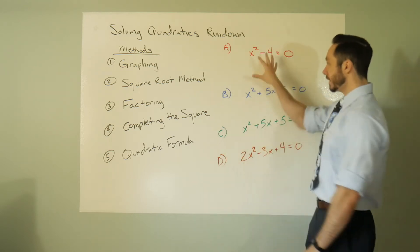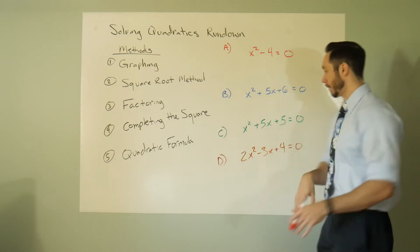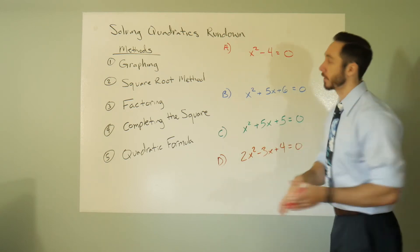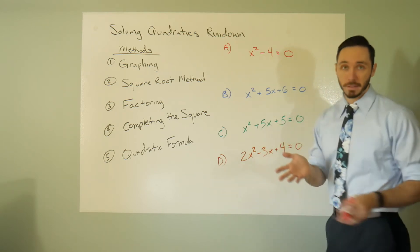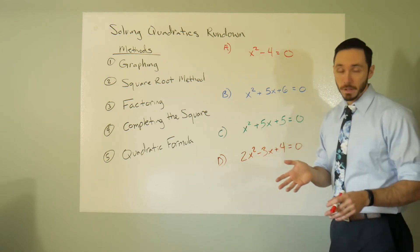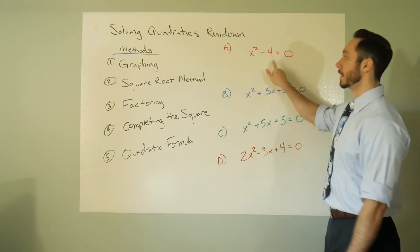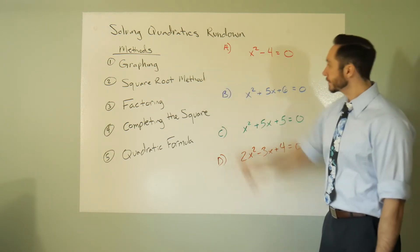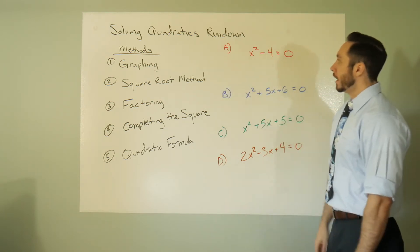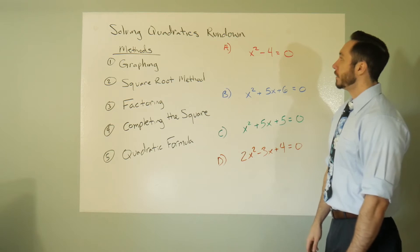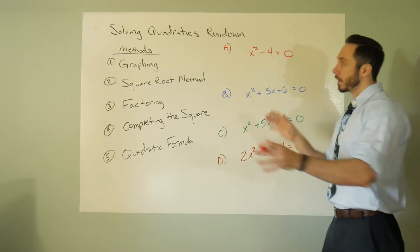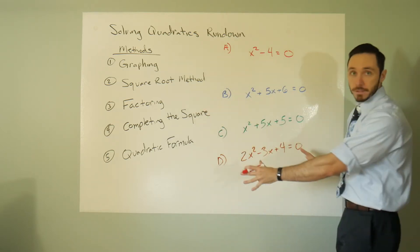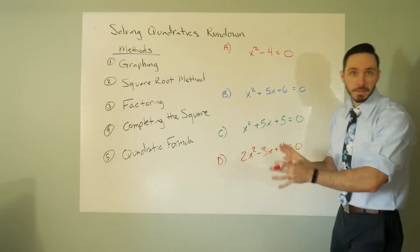Let's do a rundown of which methods work for which setups. Here are some quadratics — I've already set them all to zero, because for quadratics you always set them to zero and then solve, except for the square root method.